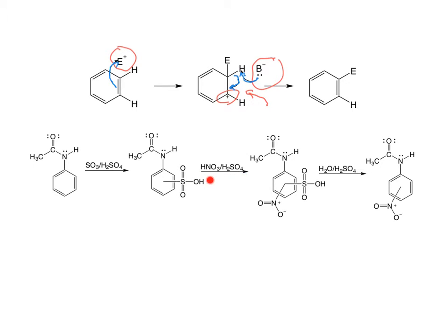Then we added a mixture of nitric acid and sulfuric acid, which created the nitronium ion. The nitronium ion acted as a second electrophile to substitute on the aromatic system. But then when we added water to quench the reaction with the sulfuric acid, that caused a desulfonation reaction — the sulfonate was removed, leaving only the nitro group. Then we were going to hydrolyze the amide, creating a nitroaniline. Those have very defined melting points, and we were going to identify whether the nitro ended up in the ortho, meta, or para position based on melting point.